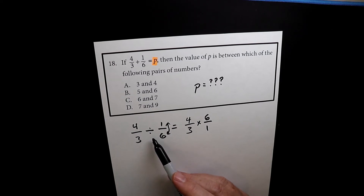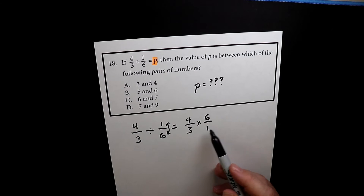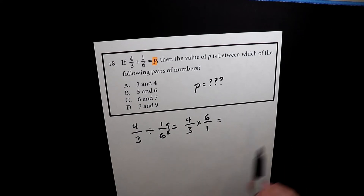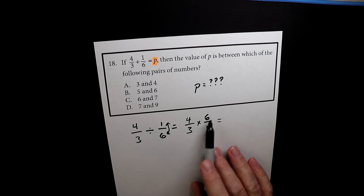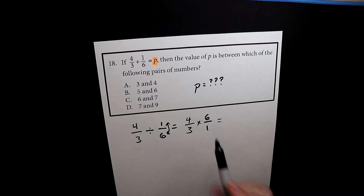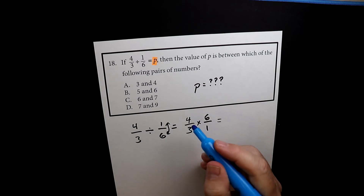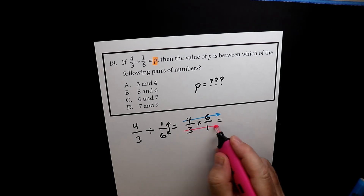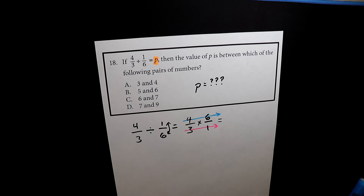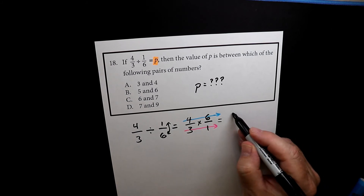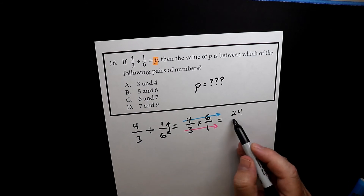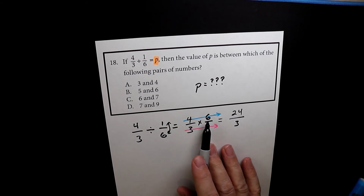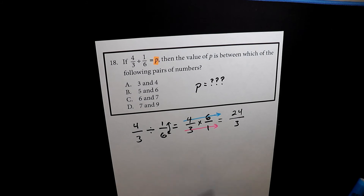Now it goes from division to multiplication. When I was a kid and first learned division I thought it was hard, but multiplication was easy, so when fractions go from division to multiplication that made me happy. When you multiply fractions you multiply straight across — the tops get multiplied and the bottoms get multiplied. So 4 times 6 is 24 on top, and 3 times 1 is 3 on the bottom.